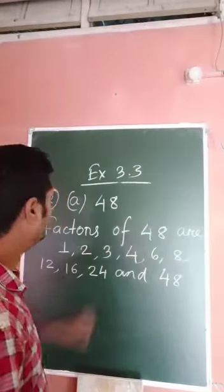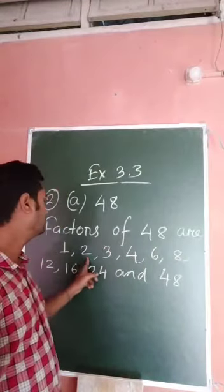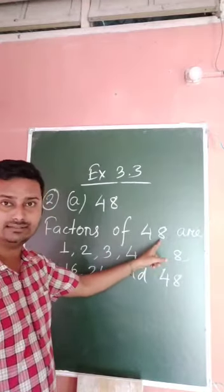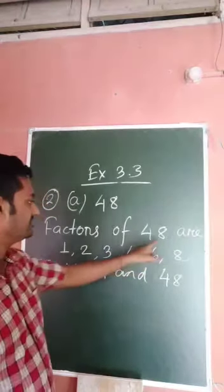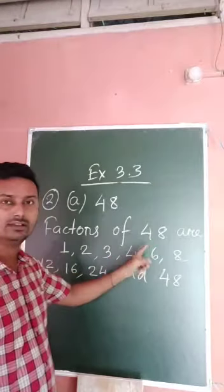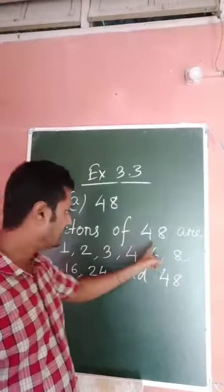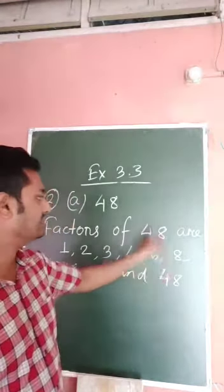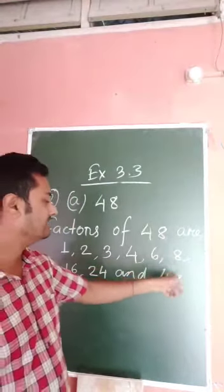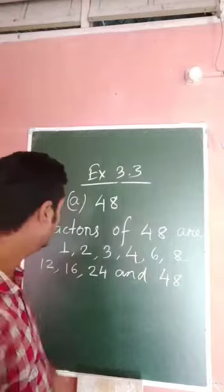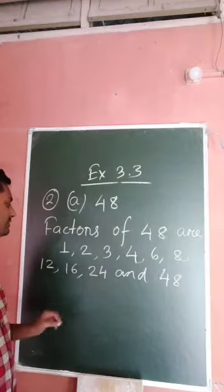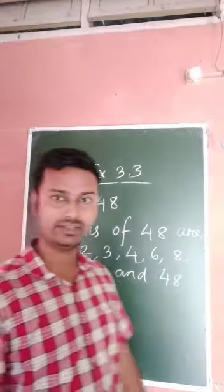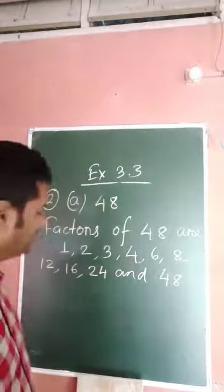So the factors of 48 are: 1, 2 — it is divisible by 2 because the last digit is even. Divisible by 3 because the sum of the digits 8 plus 4 is 12, which is divisible by 3. Also divisible by 4, 6, 8, 12, 16, 24, and 48.